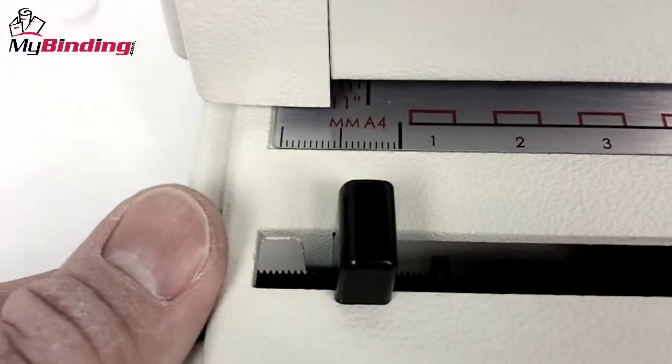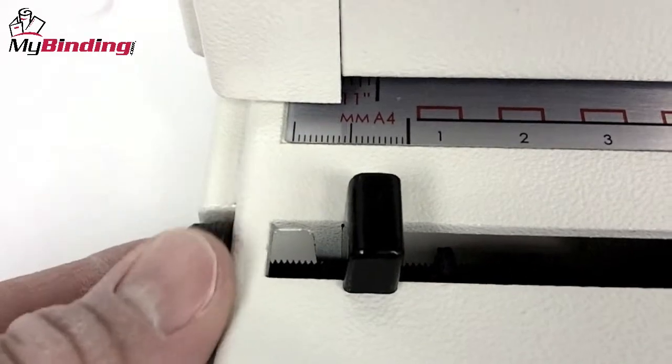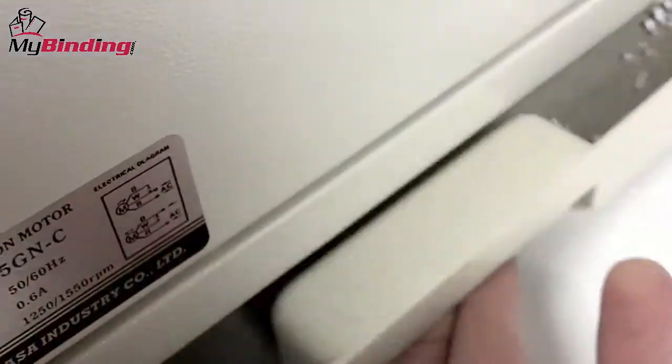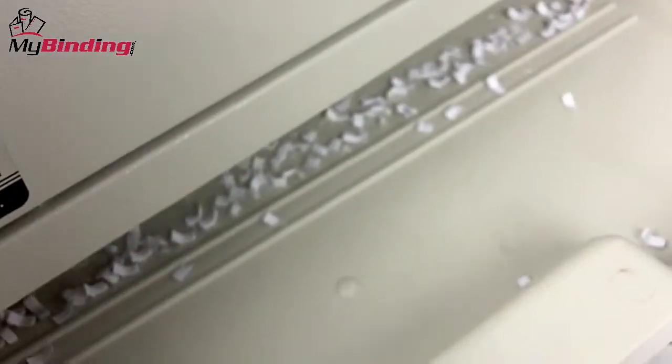Side margin control is lockable and helps in consistency of punching all papers. Although it's inconvenient because it's on the backside of a heavy machine, the chip waste tray is ample.